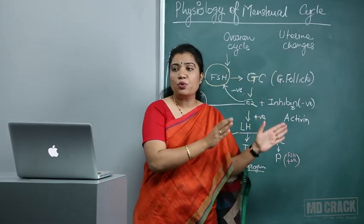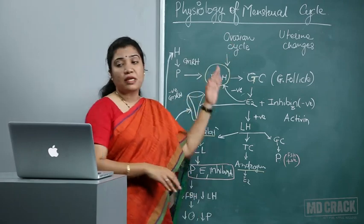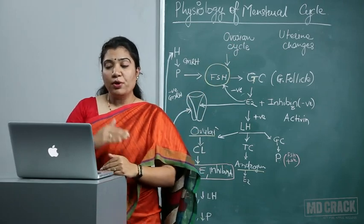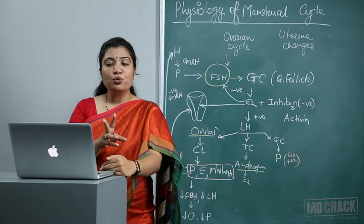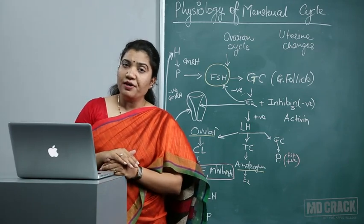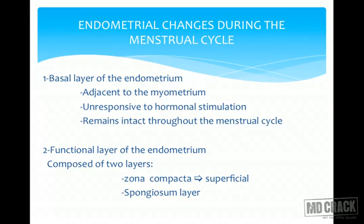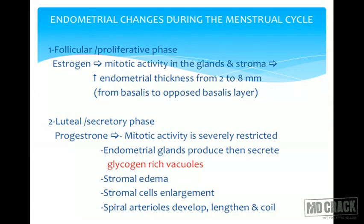Now focusing on endometrial changes during the menstrual cycle — the uterine changes. The endometrium goes through two phases: first proliferative and second secretory. The basal layer of the endometrium, which is adjacent to the myometrium, is unresponsive to hormonal stimulation and remains intact throughout the cycle. What changes is the functional layer, composed of two layers: zona compacta and zona spongiosa — these are the layers undergoing changes.